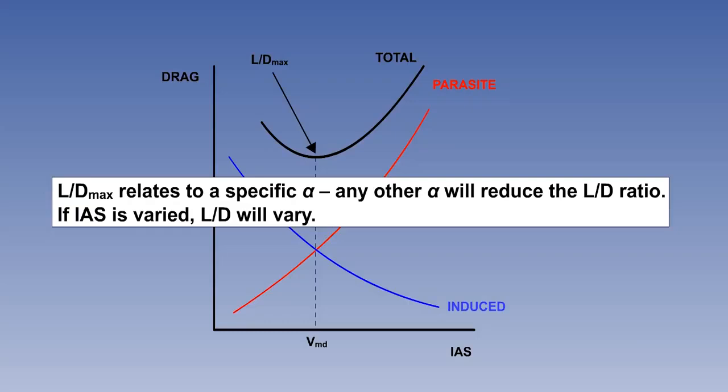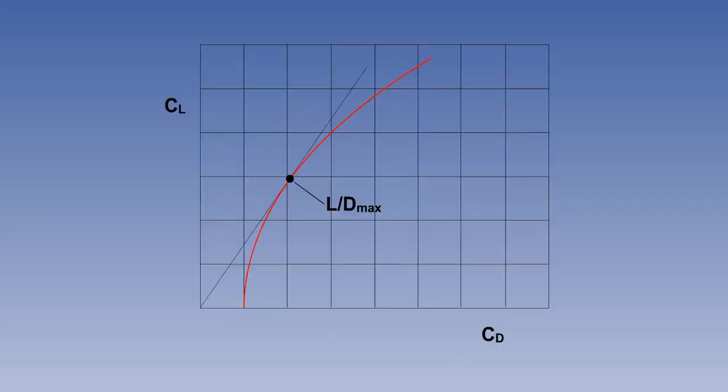You should also note that if IAS is varied, the lift-drag ratio will vary. The lift-drag ratio can be presented in a polar diagram, which plots CL against CD. This shows the CL increasing initially more rapidly than CD, but ultimately CD increases more quickly.